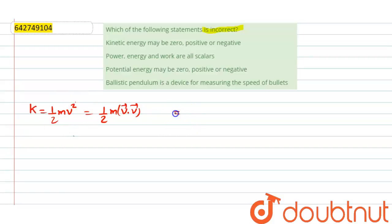So kinetic energy, this implies that kinetic energy cannot be negative because square of any term is always positive. Right?